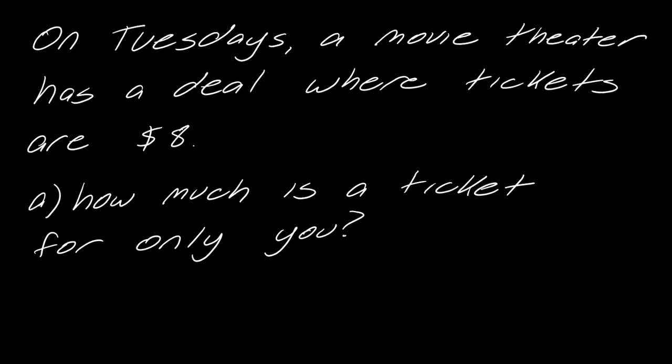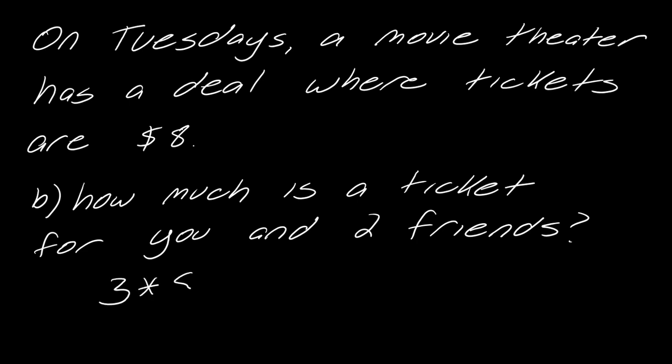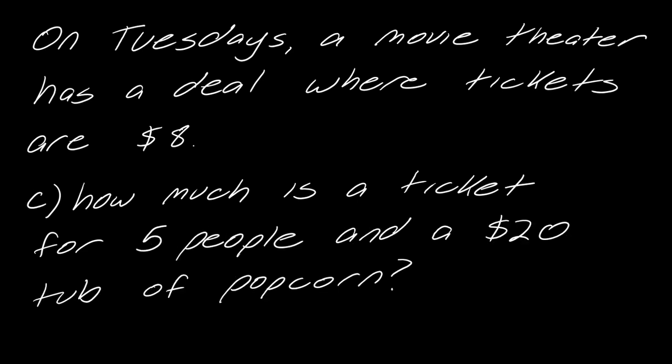On Tuesdays, a movie theater has a deal where tickets are $8. In this scenario, how much would a ticket cost for only you? That's pretty obvious, right? It's just $8. Now how much is a ticket for you and two friends? Think about this. You and two friends. It's going to be 24, but why? You're taking the three of you times the cost of a ticket, and that is $24.